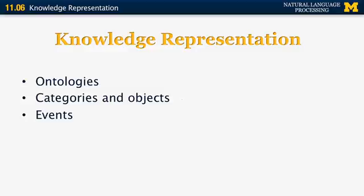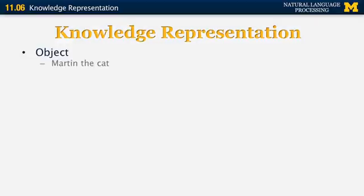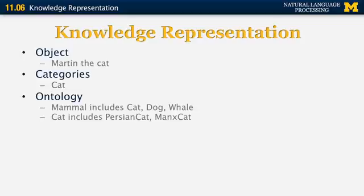The other things that we want to represent are events, times, and beliefs. So let's look at some examples. An example of an object can be Milo the cat. A category may be cat. And an ontology may have the following levels: a mammal category that includes the categories cats, dogs, and whales. And cat can include its own subcategories, for example, Persian cat or Manx cat.